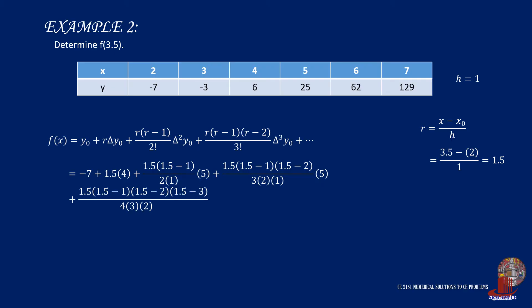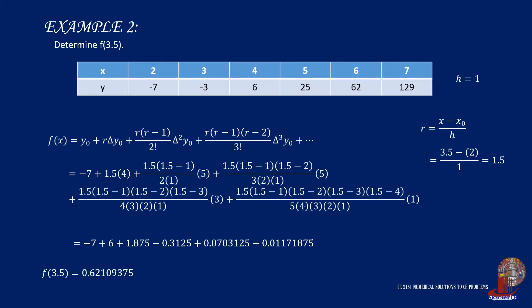Plug the values from the leading forward differences and r so we get the long equation, which can then be simplified as -7 plus 6 plus 1.875 minus 0.3125 plus 0.0703125 minus 0.01171875. And this can then be further computed as 0.62109375 for f(3.5).